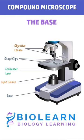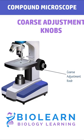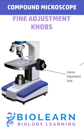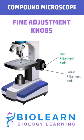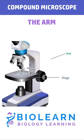The base allows the microscope to be kept on a surface. Coarse adjustment knobs are used for rapid and precise focusing, whereas fine adjustment knobs help to get a sharp and clear image. The arm forms the vertical supporting structure.